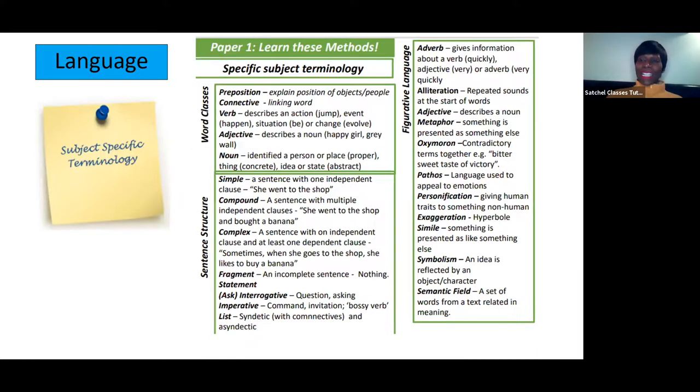First, let's think about the difference between language and structure. For this part of your exam, you'll be expected to be confident with subject terminology. Subject terminology for language is about words and sentences—word class, small parts like prepositions (in, out, on), connectives, verbs, adjectives, nouns, and larger parts like simple sentences, compound sentences, complex sentences, imperative sentences that tell you what to do, interrogative sentences that ask questions, and lists.